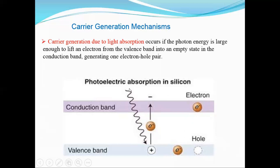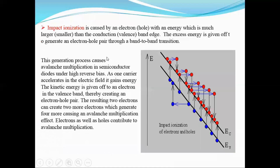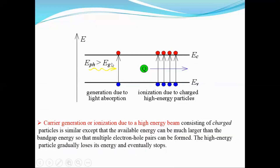This electron-hole pair is created by absorption of photon energy, which is called carrier generation due to light absorption. As seen in the diagram, the photon energy E_PH should be greater than the band gap energy — the energy gap between the conduction band and the valence band. When the photon energy exceeds the band gap energy, the electron moves from the valence band into the conduction band, giving one electron in the conduction band and one corresponding hole in the valence band.